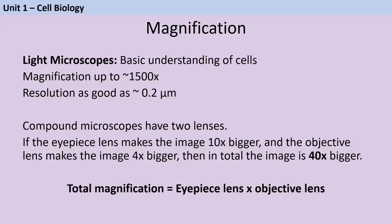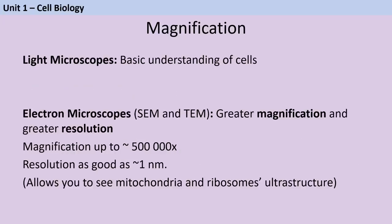There are two types of electron microscope — scanning electron microscopes and transmission electron microscopes — both with much greater magnification and resolution than light microscopes, because they use a beam of electrons rather than a ray of light. The magnification of an electron microscope can be as good as 500,000 times, and the resolution can be as good as a single nanometre. In biology this means we can view mitochondria and even the ultrastructure of subcellular structures — for example, what does the inside of a mitochondrion look like?